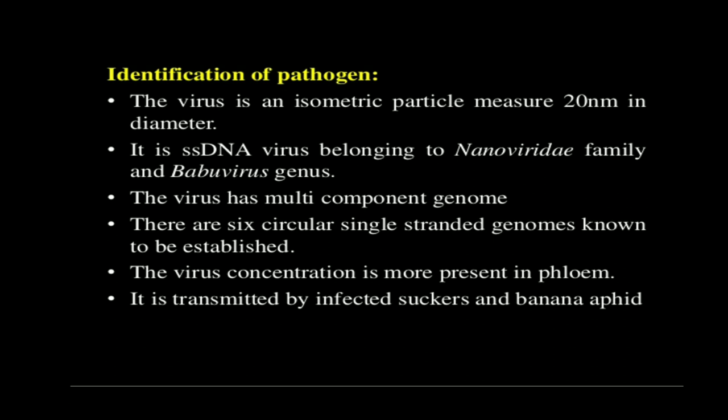Identification of the pathogen: the virus has isometric particles which measure 20 nanometers in diameter — you can imagine how small it is. It is a single-stranded DNA virus which belongs to the Nanoviridae family and the Babuvirus genus. The virus has a multiple-component genome — there are six circular single-stranded genomes known to be established up till now. The concentration of this virus is more present in the phloem, since phloem conducts food material and the virus feeds on it, so the concentration of this virus will be found in the phloem tissue.